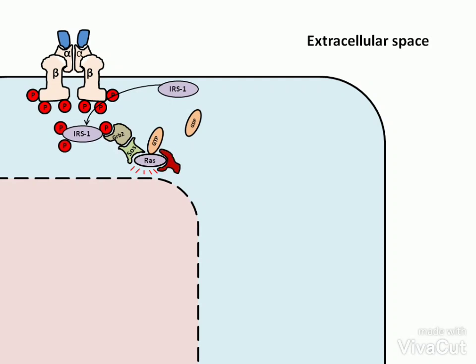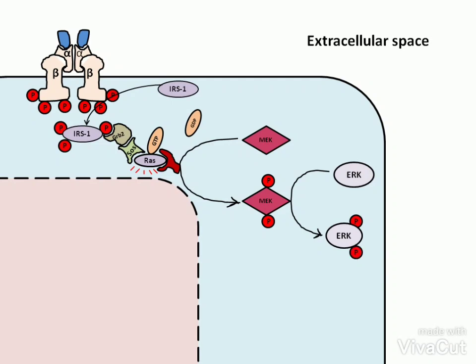Active RAF-1 phosphorylates inactive MEK on two serine residues, activating it. Active MEK phosphorylates ARK on a threonine and a tyrosine residue. As a result, ARK becomes active.